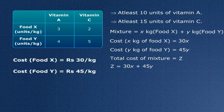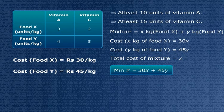Now the dietician wants to minimize the total cost of the mixture, that is the value of Z. So what is the objective function here? That's minimize Z equals 30X plus 45Y.